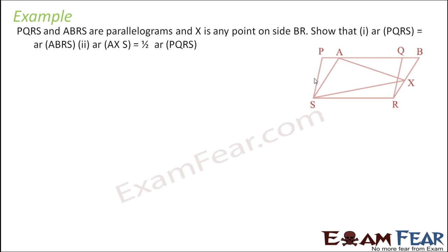Pretty easy question: P, Q, R, S and A, B, R, S are parallelograms. So we have parallelogram PQRS and parallelogram ABRS, which have a common base RS. X is a point on the side RS. Show that area of PQRS equals area of ABRS.